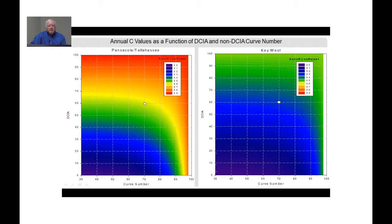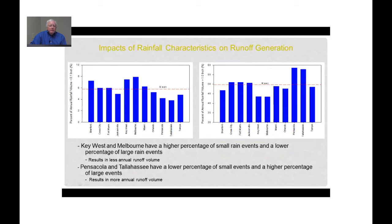In the Pensacola and Tallahassee area, rainfall is dominated by large events occurring during spring and fall when fronts deposit relatively large amounts of rain. In Key West, most rain is provided by relatively small rain events, the majority of which infiltrate into the ground. So in Key West, much of the rainfall infiltrates, resulting in a lower annual runoff coefficient.